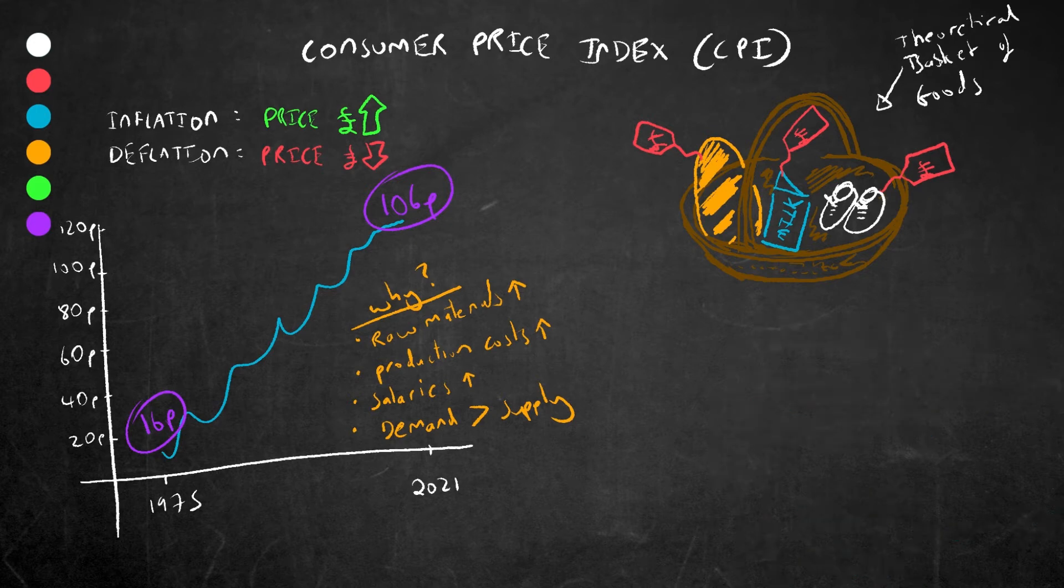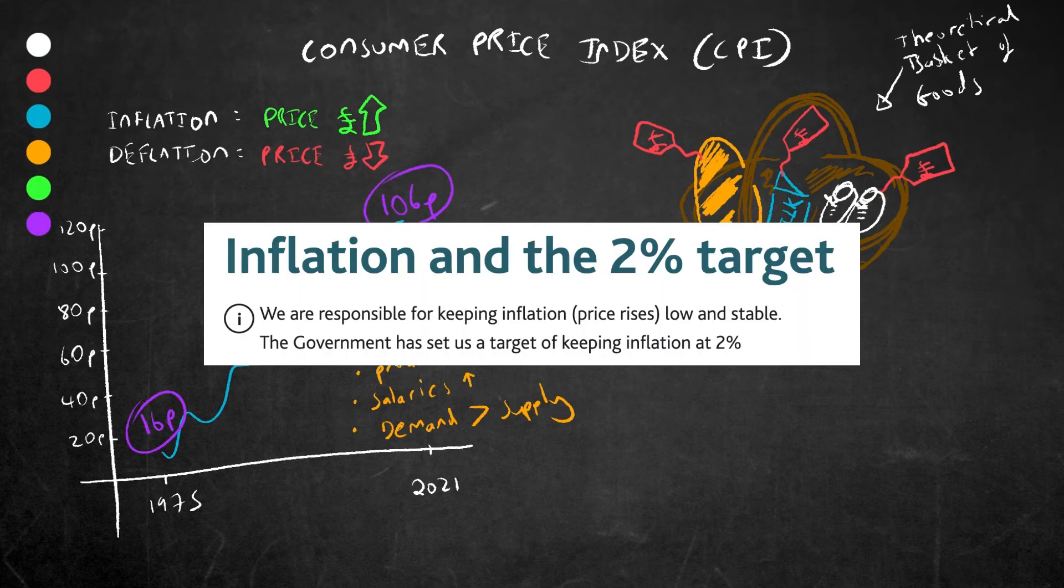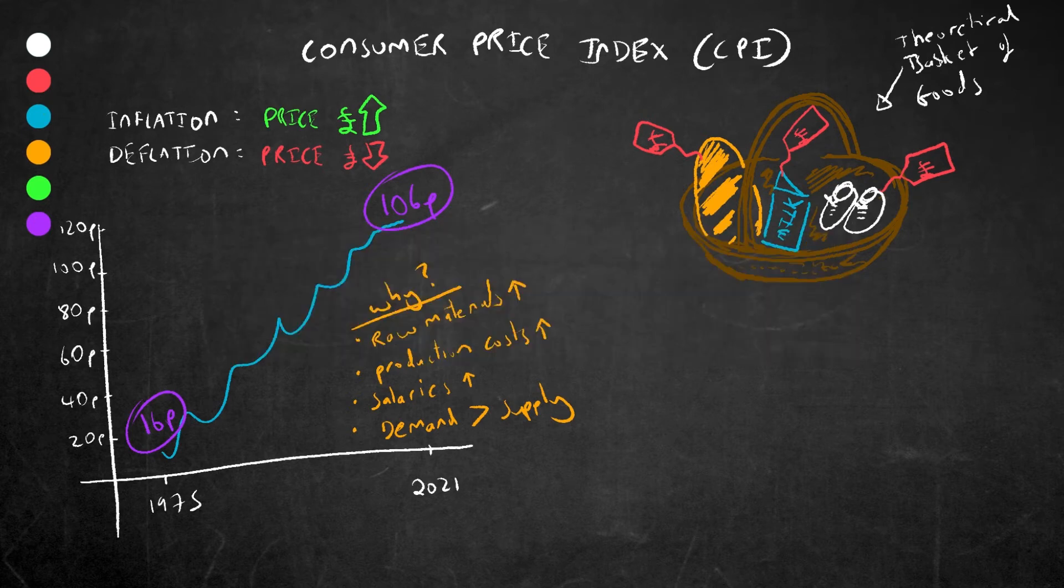CPI helps determine the purchasing power of a currency and consequently the rate of inflation. The government here in the UK aims to keep inflation at the 2% level. The general view is that if inflation is too high or changes a lot, it's hard for businesses to set the right prices for their products and for people to plan their spending. On the other hand, if it is too low, then people might not spend as much as they expect prices to fall, which stops the economy from growing.